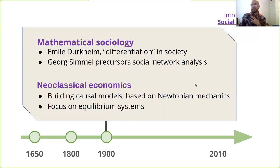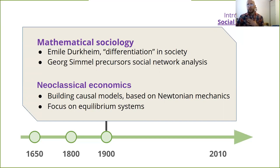In contrast to mainstream economics, sociologists were a little cautious to embrace too reductionistic models and the equilibrium modeling that neoclassical economists did. They turned more towards heterodox tools and methodologies.